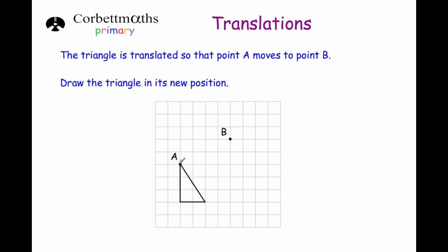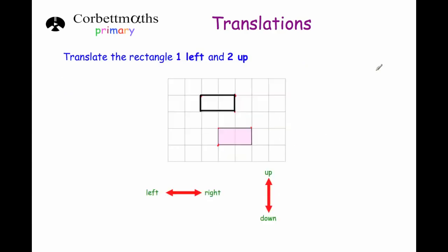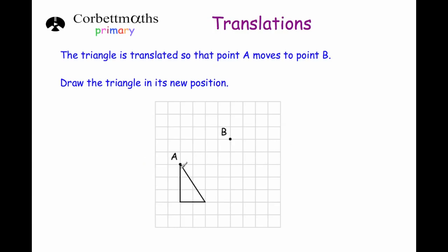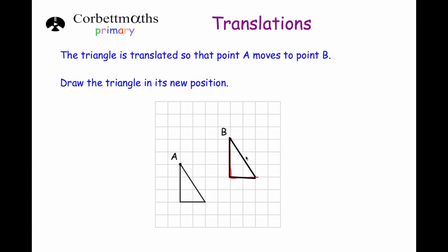The last question says a triangle has been translated so that point A moves to point B — draw the triangle in its new position. You can see how we've moved from A to B and move the other points the same way. The shape doesn't change in appearance. Point A is at the top, so we go down three squares and across two, join them up — use a ruler — and we have triangle B. We've moved point A to B and the rest of the triangle along with it.